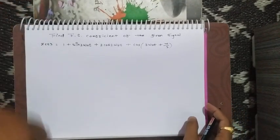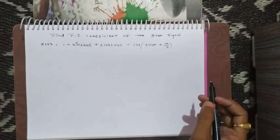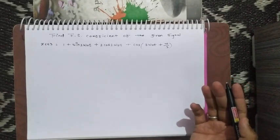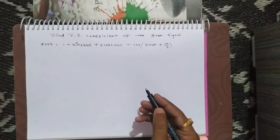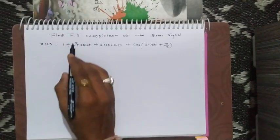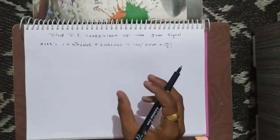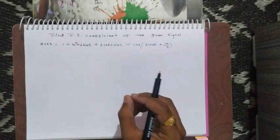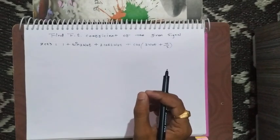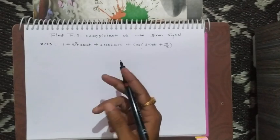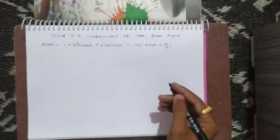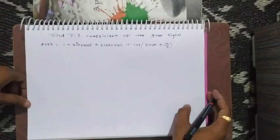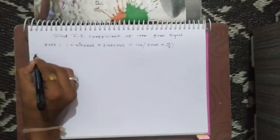Hello friends. In this segment we will discuss how to find Fourier series coefficients of given continuous as well as discrete type signals. As you all know, Fourier series representations are basically used to represent periodic signals. We are having two types of signals which can be periodic or non-periodic. The question arises: how will you find the Fourier series coefficient of the given function?